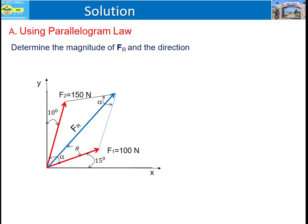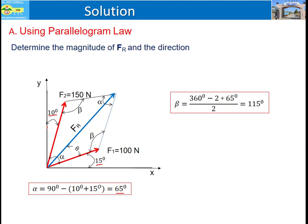Alpha is the angle between F1 and F2. Alpha can be calculated as 90 degrees minus (15 plus 10) degrees, so alpha is 65 degrees. Beta can be calculated as 360 degrees minus 2 times 65, divided by 2, because the summation of the internal angles of the parallelogram should be 360 degrees. So beta is 115 degrees.